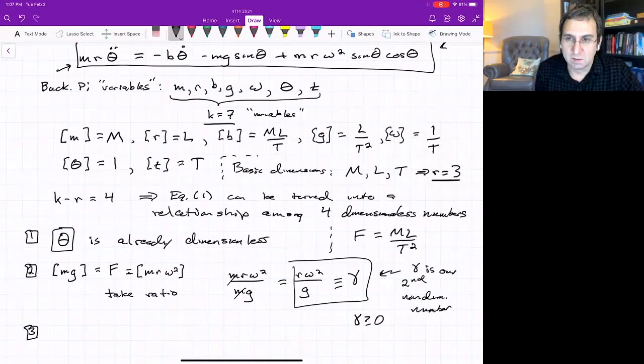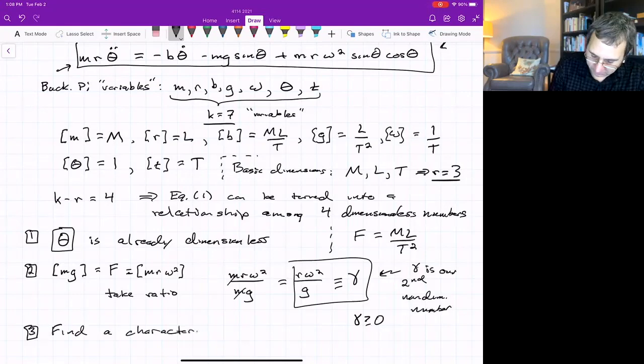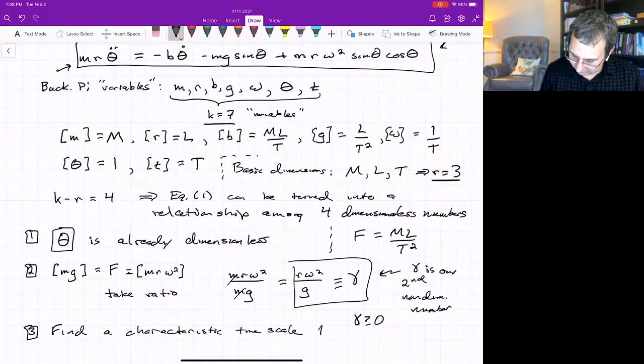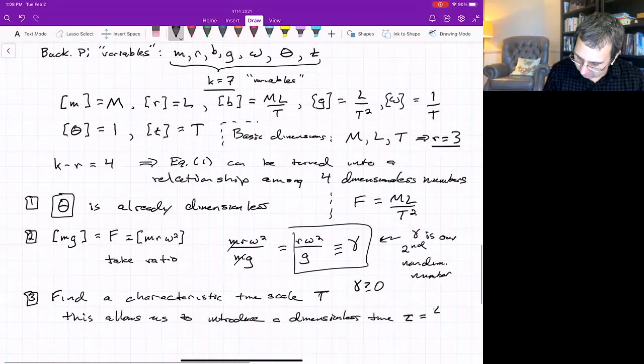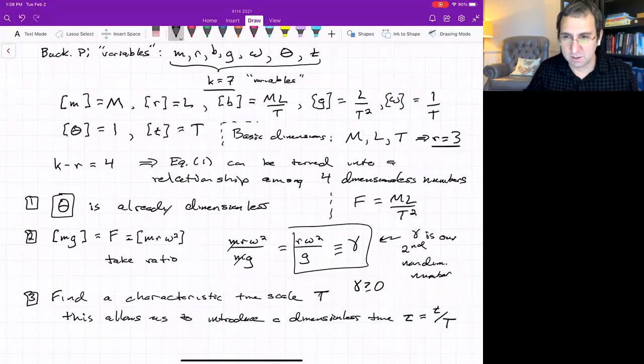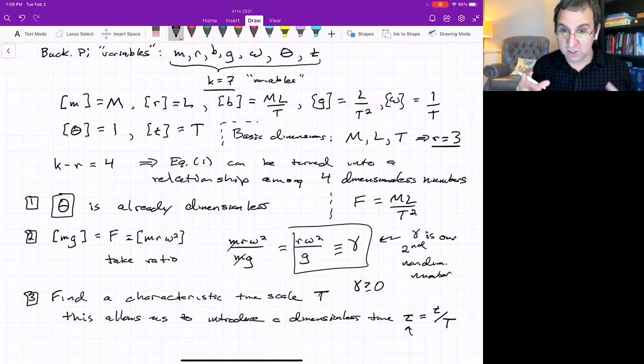Number three. So there's only two more. We can find or introduce a characteristic timescale. This is a standard thing when you have a differential equation where there's derivatives with respect to time. Once we have a characteristic timescale, hopefully this won't lead to confusion, but I'll call it capital T, then we can introduce a dimensionless time. Let's call it tau. It'll be normal time measured in seconds divided by capital T, which will also be measured in seconds.